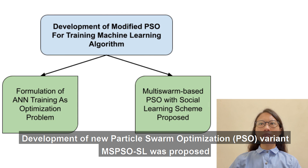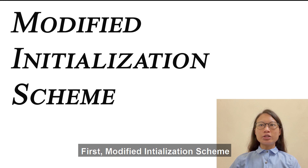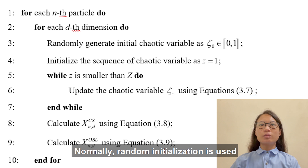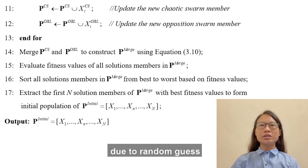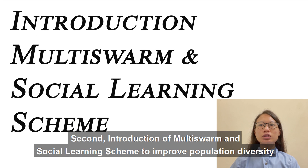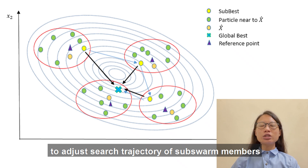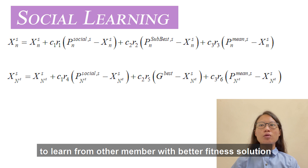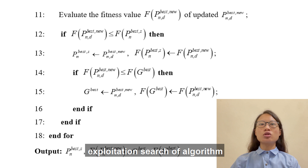The second major session covers the development of a new PSO variant, MS-PSO-SL. Three major modifications are introduced. First, a modified initialization scheme based on the concept of chaotic search and opposition-based learning to generate the initial population — normally random initialization is used, but the quality of the initial solution is not guaranteed due to random generation. Second, introduction of multi-swarm and social learning scheme to improve population diversity; multi-swarm is the formation of multiple sub-swarms to adjust search trajectory, while social learning allows each sub-swarm to learn from members with better fitness solutions. Lastly, two search operators are introduced to achieve better balancing of exploration and exploitation in the search algorithm.